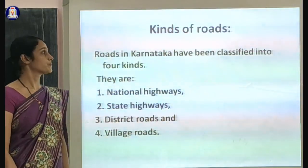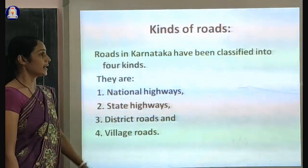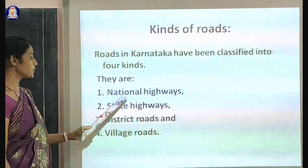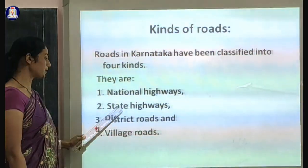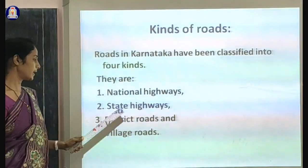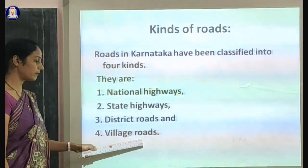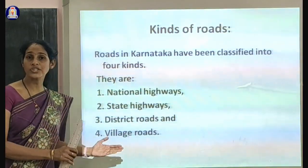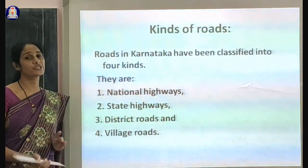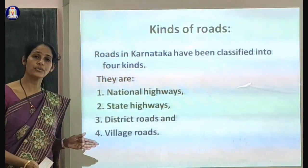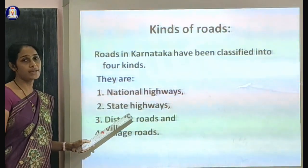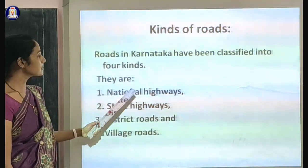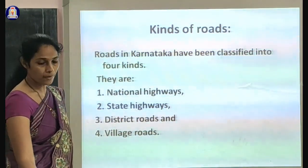Roads in Karnataka have been classified into four kinds: first, national highways; second, state highways; third, district roads; and fourth, village roads. Let us discuss these kinds of roads one by one.